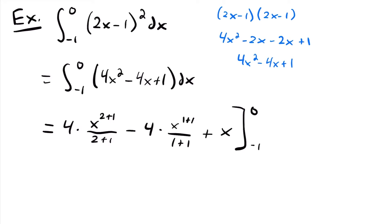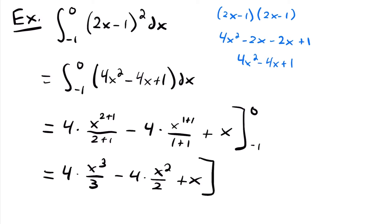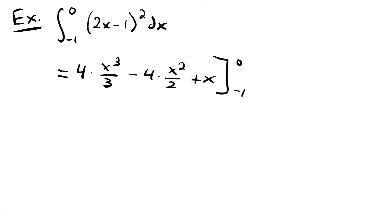If we simplify, this will be equal to 4 times x to the third power divided by 3, minus 4 times x squared divided by 2, plus x, evaluated from negative 1 to 0. And if we clean up our work a little, we can simplify one more time: this will be equal to 4 thirds times x cubed minus 2x squared plus x, evaluated from negative 1 to 0.